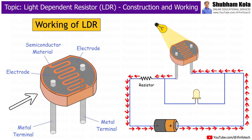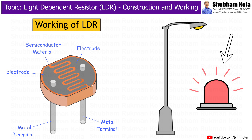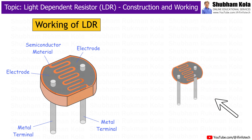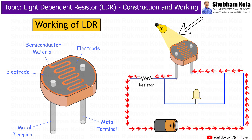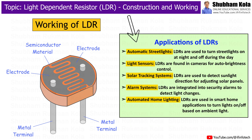LDRs are widely used in light sensing applications, including automatic lighting systems, street lights, and alarm circuits. In this session, we will explore how an LDR is built, how it works to vary resistance based on light intensity, and some common applications of LDRs in electronic circuits.